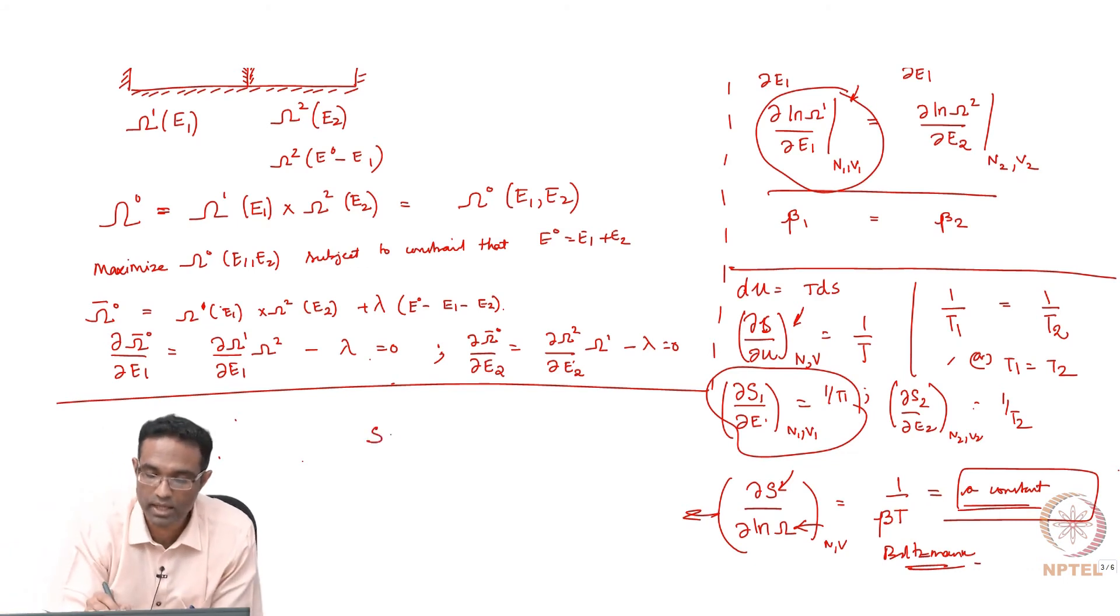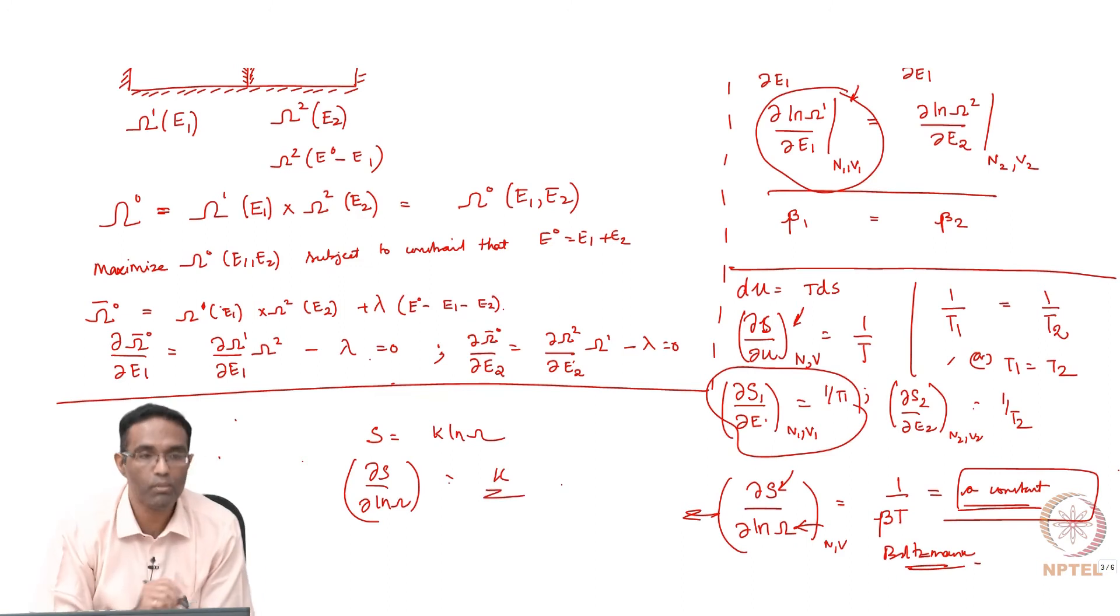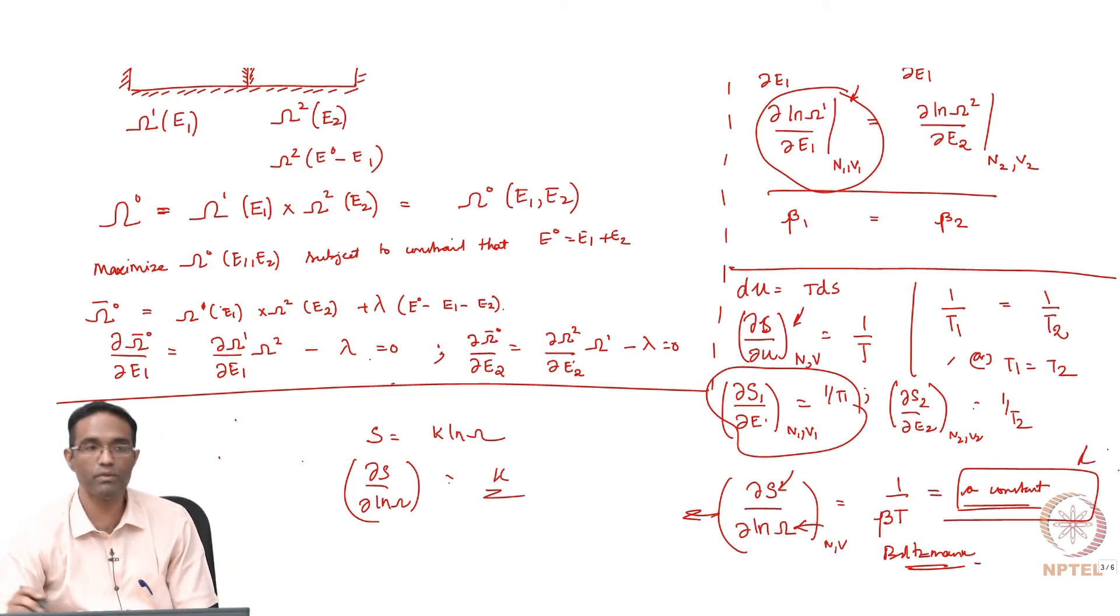Later on, Planck came and said s is equal to k ln omega. And then if you did this dou s by dou ln omega, you would get the Boltzmann's constant k. So this 1 by beta t happens to be a universal constant and we call it the Boltzmann's constant.